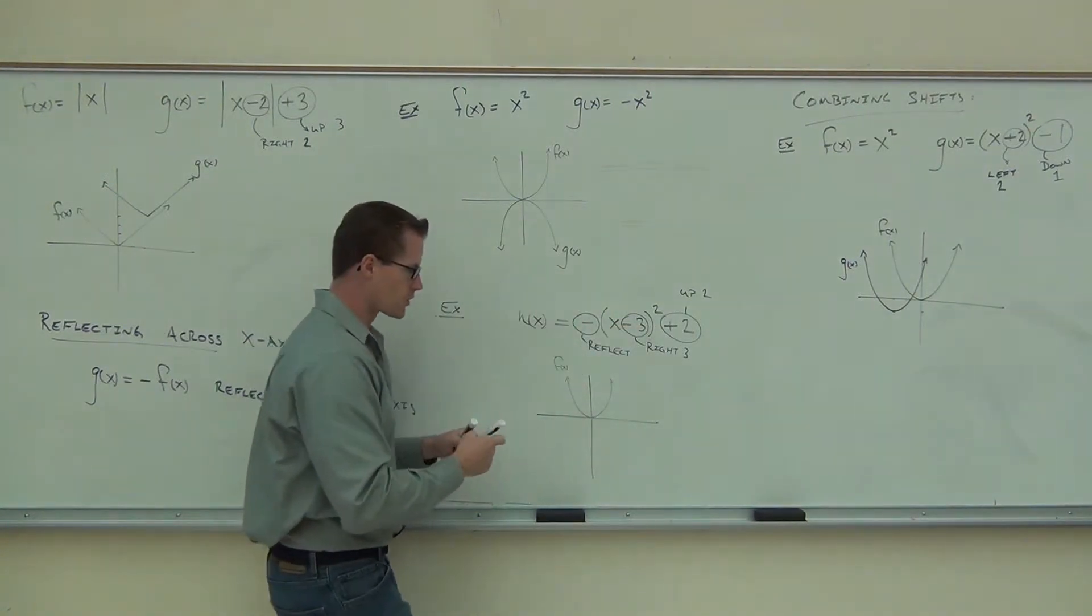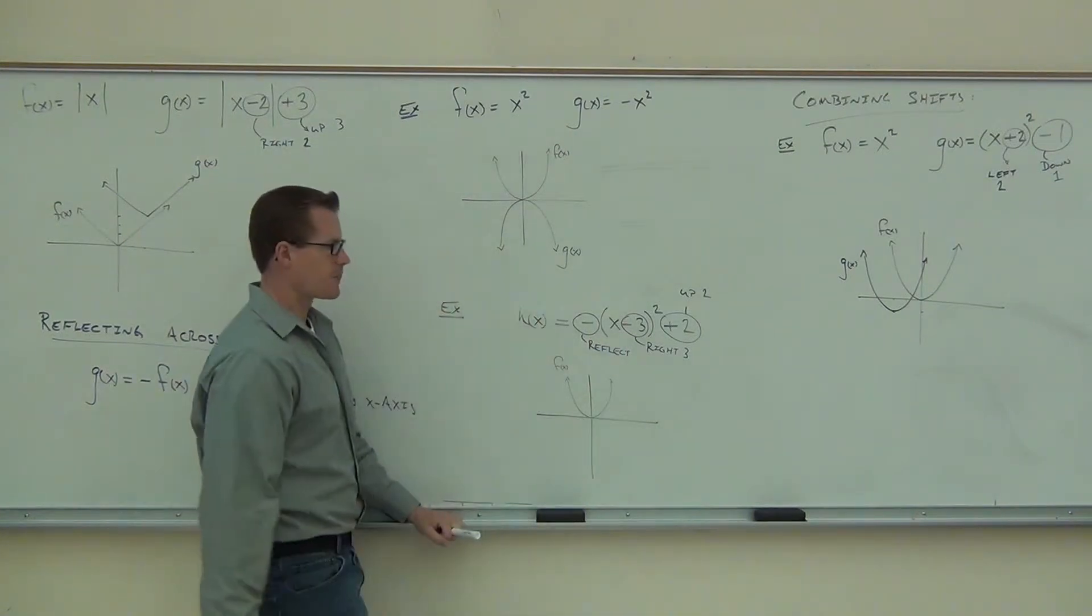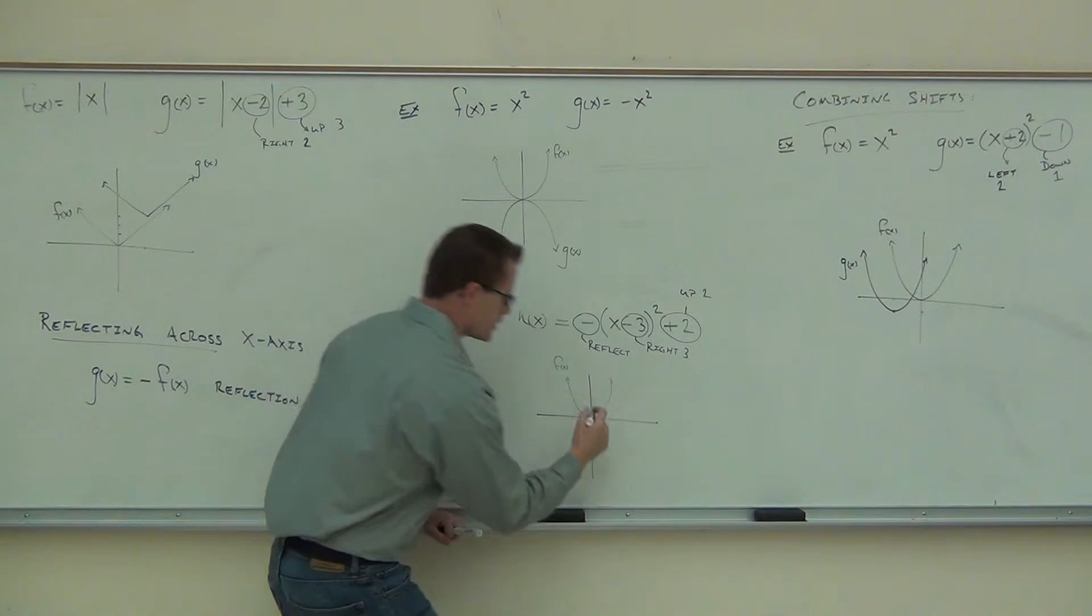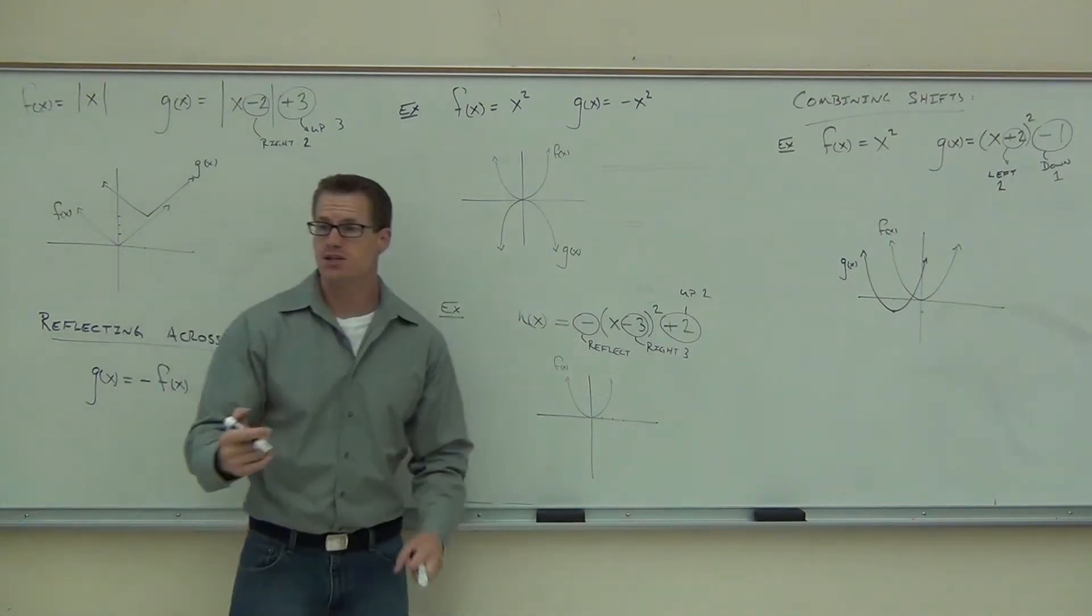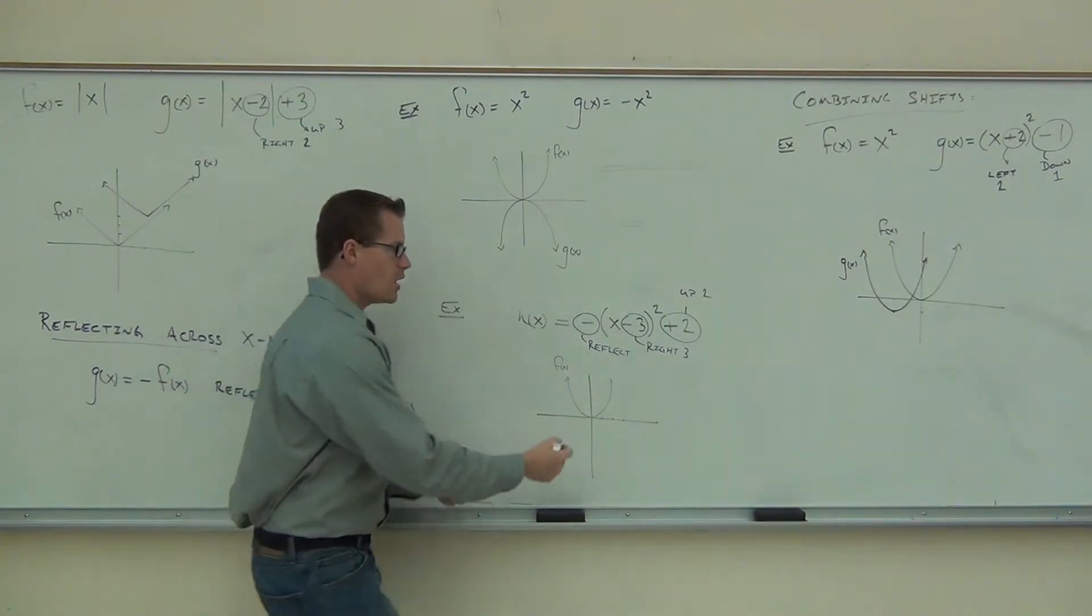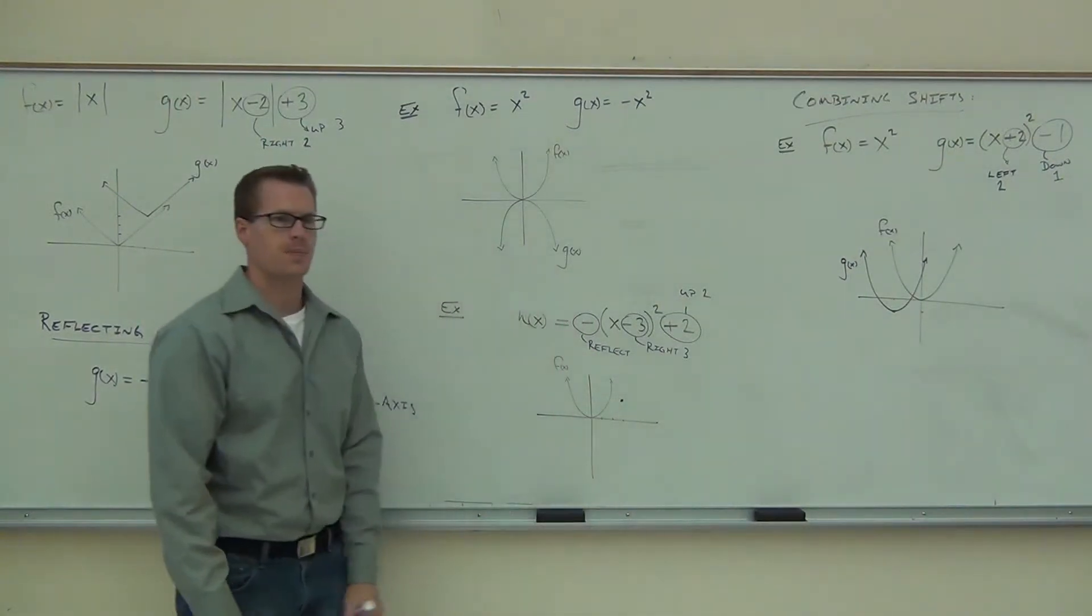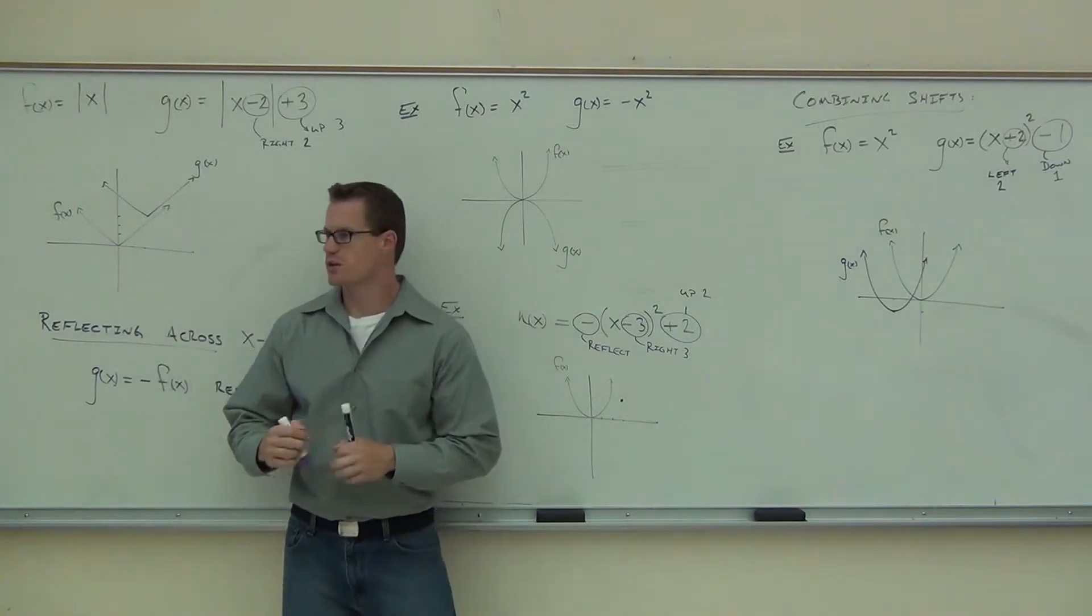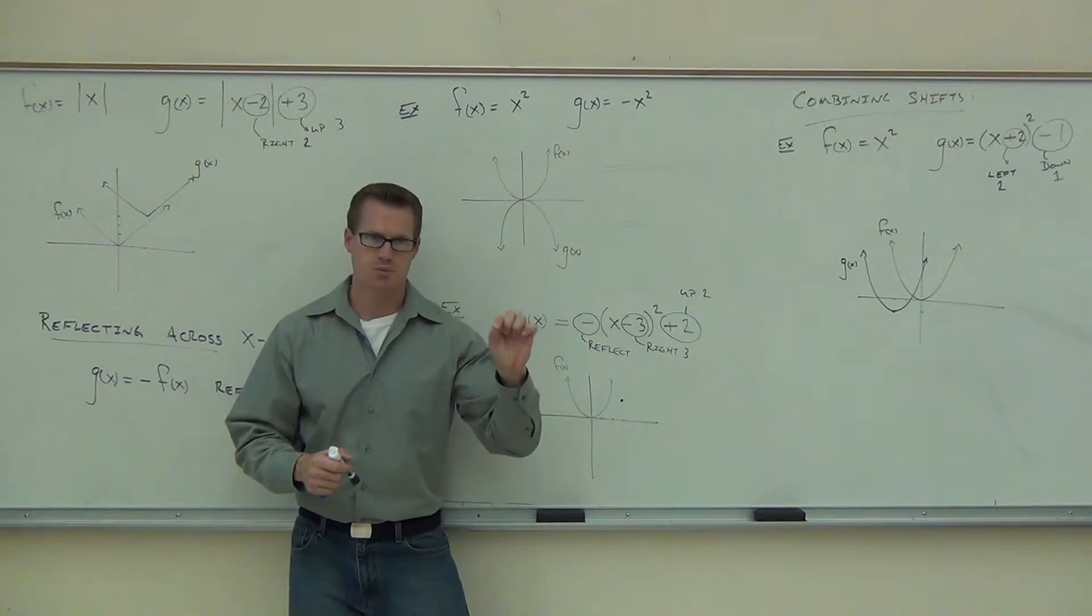It says we're going to go up 2. So on our graph, we're going to make two steps up. It said we're going to go to the right 3. That's 1, 2, 3 to the right. We do a combination of those moves. So we're going to go up 2 and right 3, and we're going to put a point right there. That's the first thing you look at. You look at up or down first. Then you look at left or right. Then you put your point.